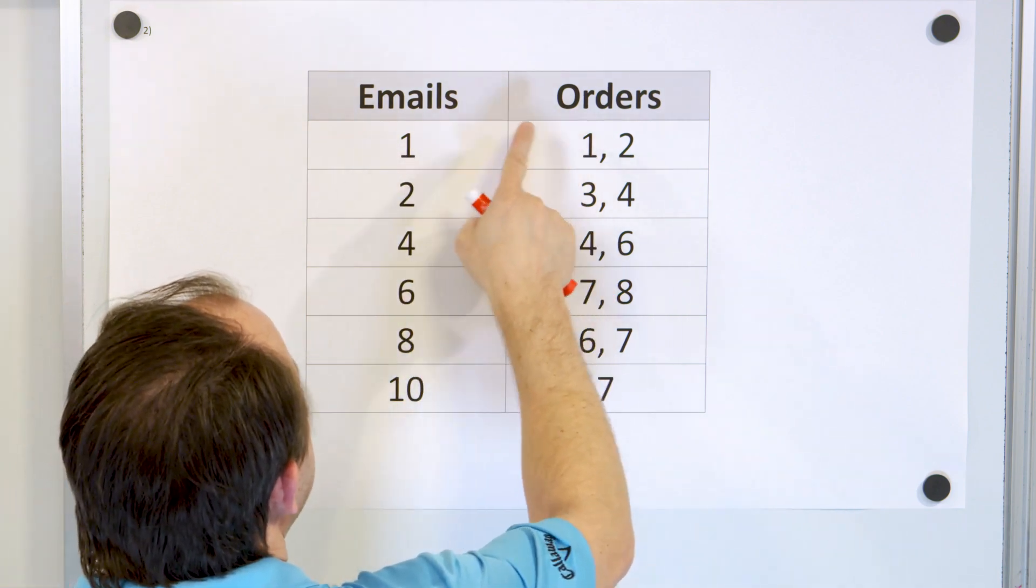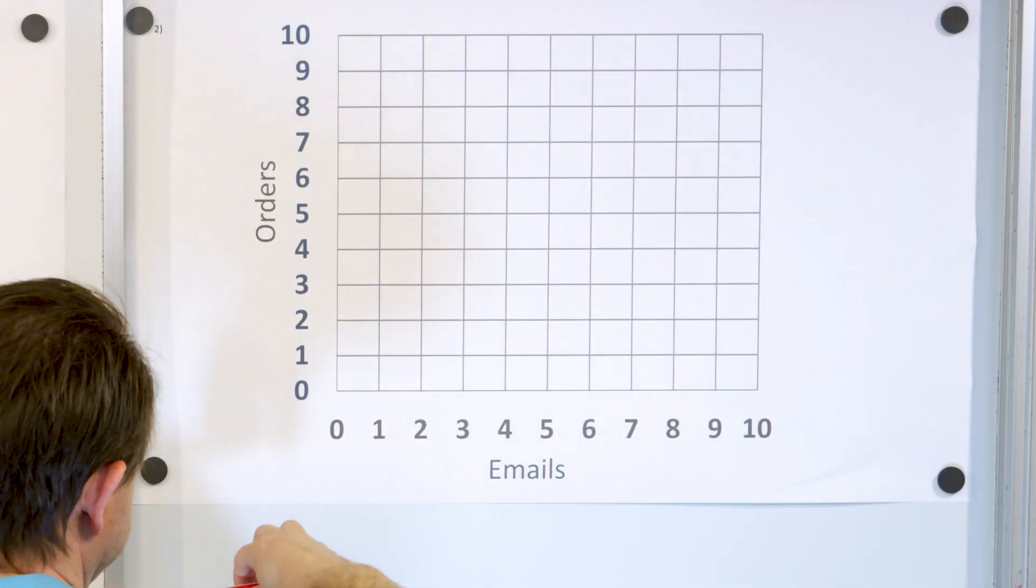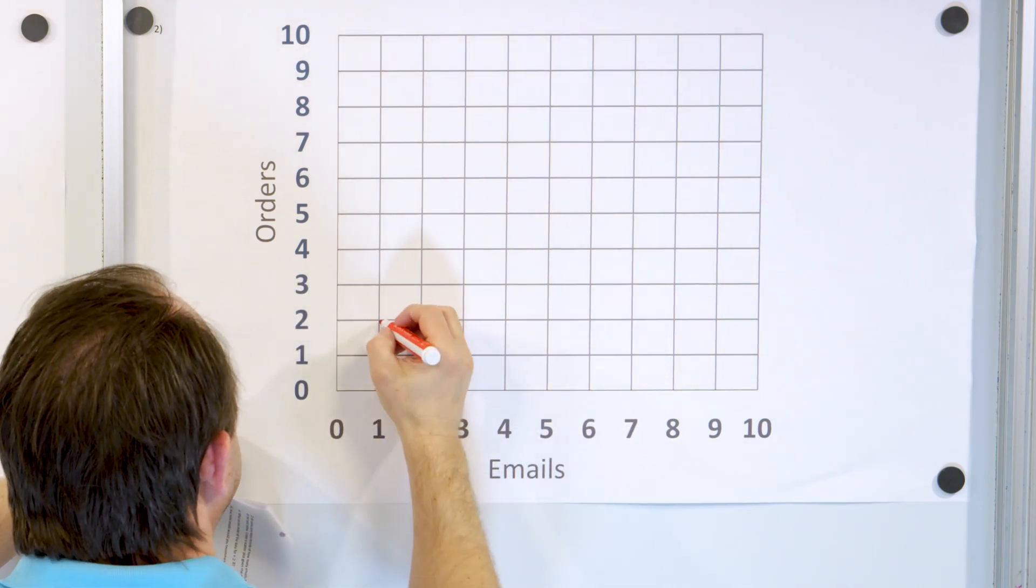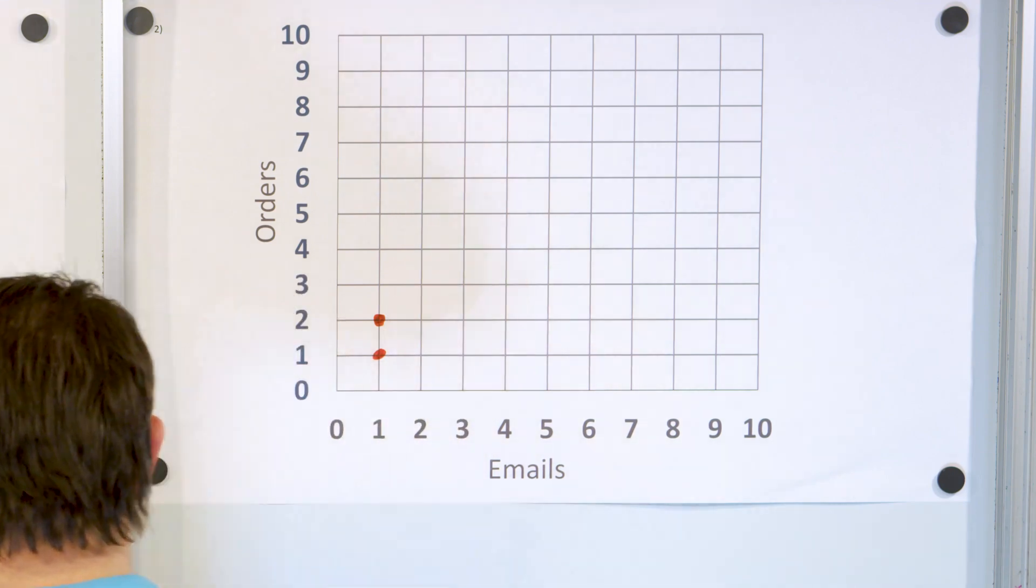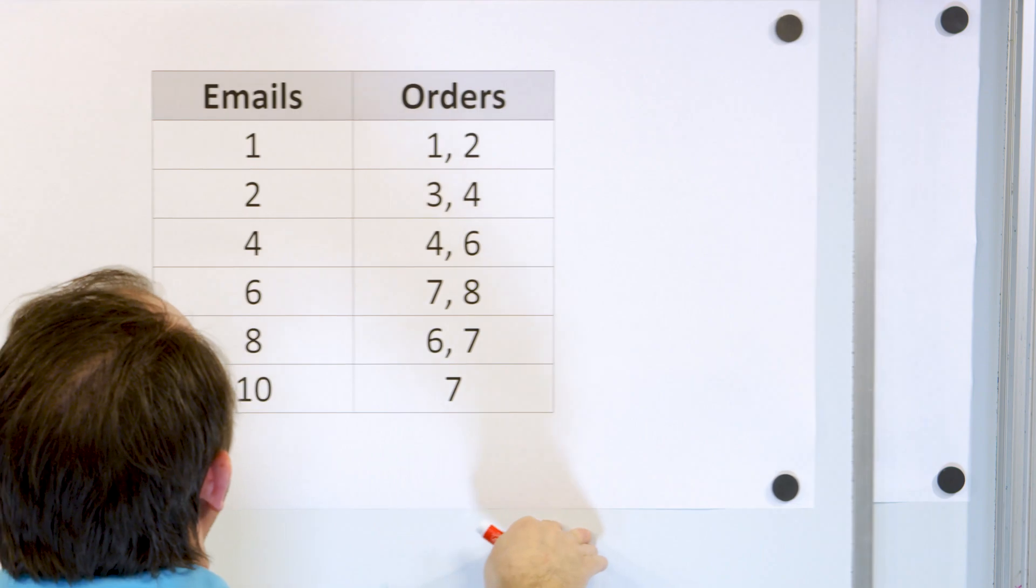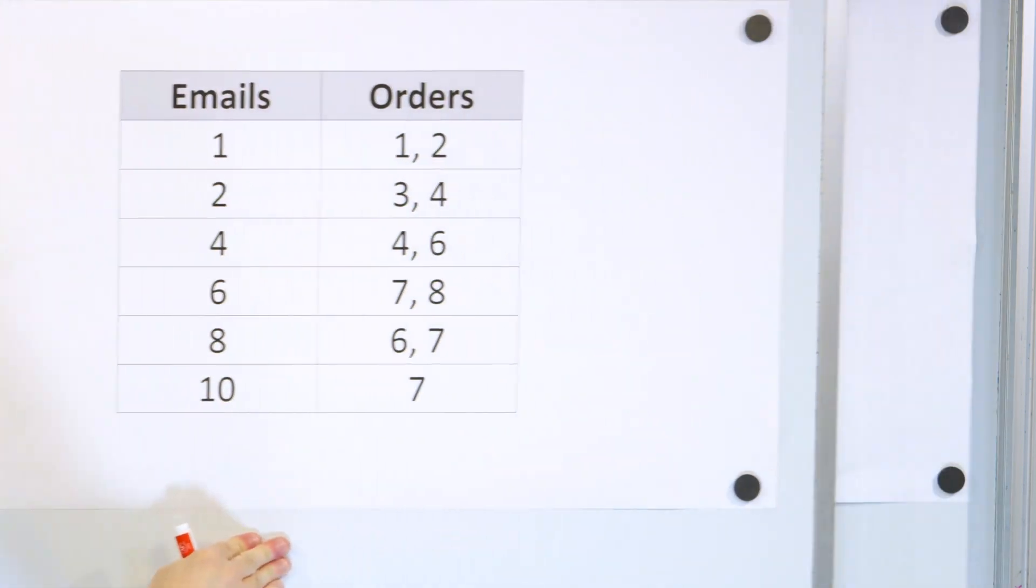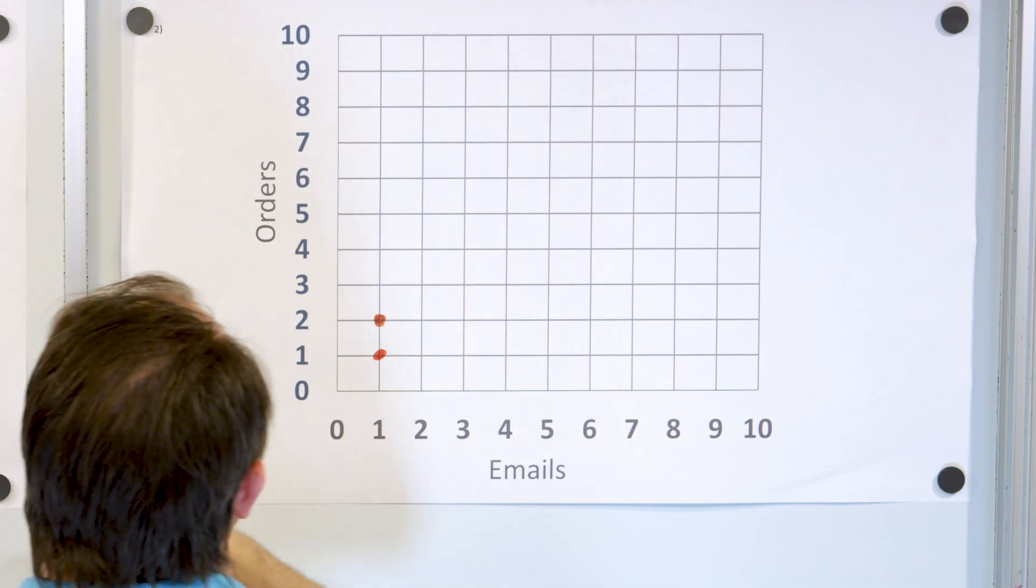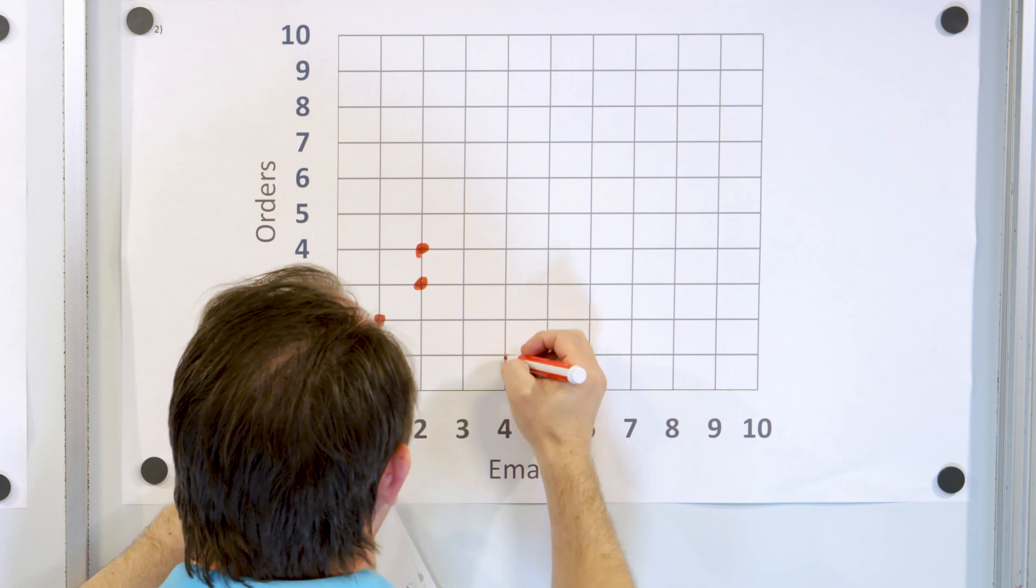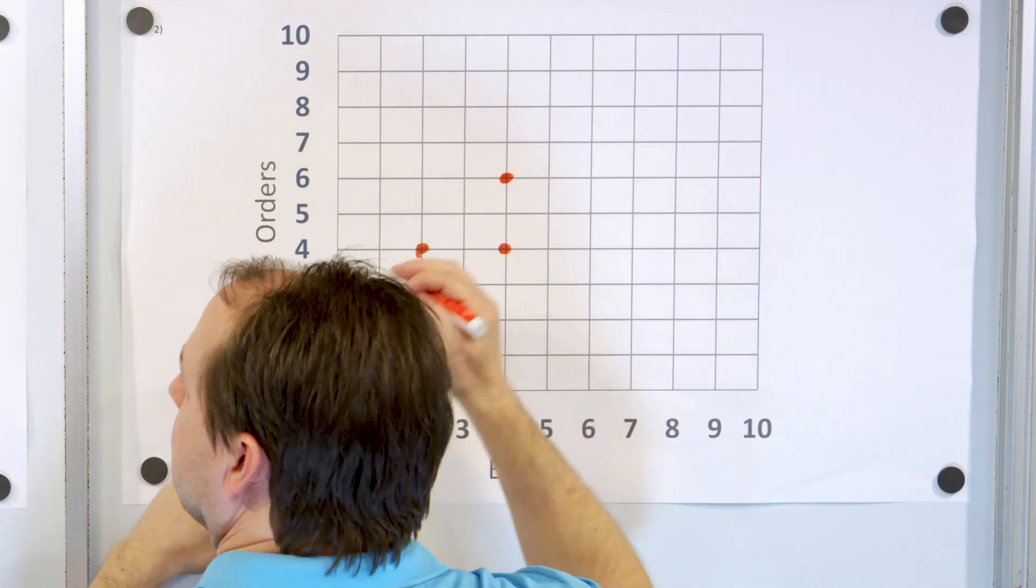So here we have one comma one, one comma two. We can just plot these guys. One comma one and one comma two. Then we have two comma three, two comma four, four comma four, four comma six. So I'll just do those four points. Two comma three and two comma four and four comma four and four comma six.